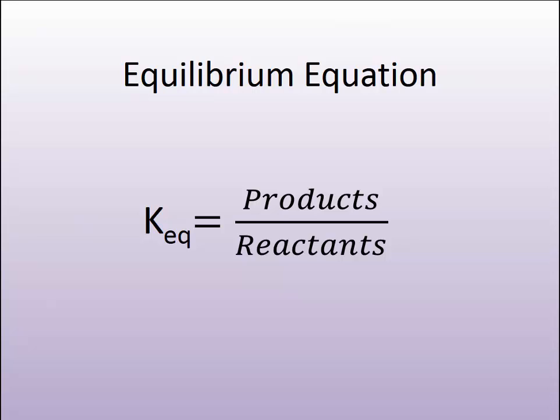If I have more products than I have reactants, then I have a lot more ions than I do solid material in my solution. The equilibrium constant is a number that tells me that that value is very high. In other words, the numerator is much higher than the denominator. I have a higher value, which means I have more products. And then the reverse is true.